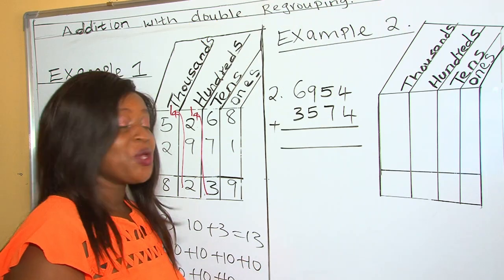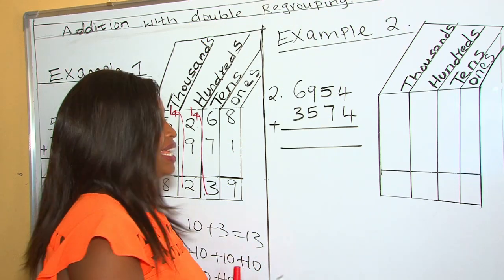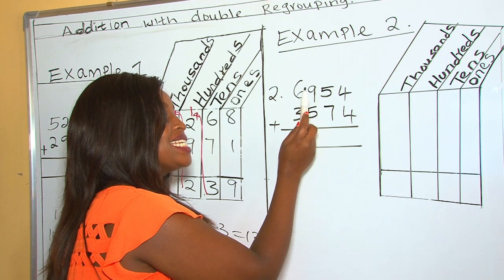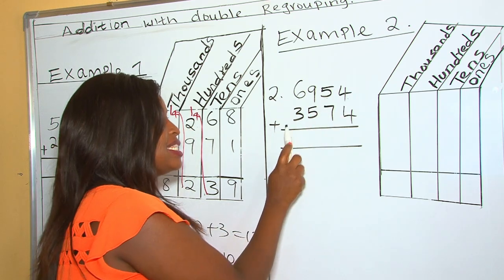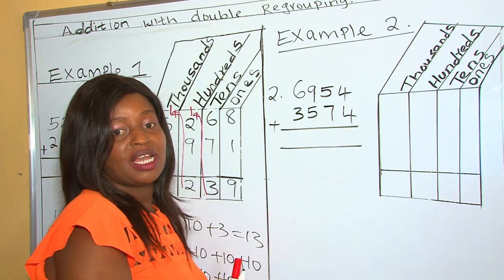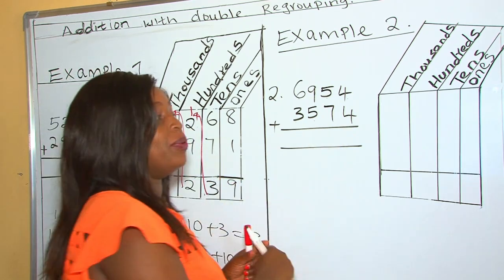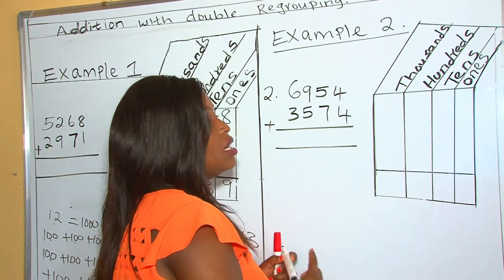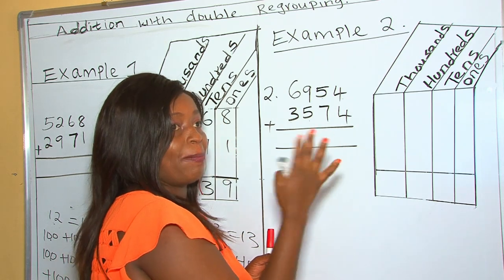In our second example, you are given a number like 6954 plus 3574. Now we begin by putting them to this table. This table, it shows the place values.